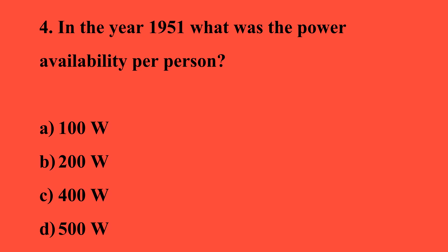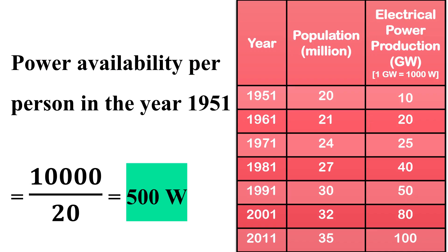The fourth question is: in the year 1951, what was the power availability per person? The options are A: 100 watts, B: 200 watts, C: 400 watts, and D: 500 watts. The power production is given in gigawatts. For 1951, the electrical power production is 10 gigawatts, which is 10,000 watts. Dividing 10,000 watts by the population in 1951, which is 20 million, we get 10,000 divided by 20 equals 500 watts. Therefore, the answer is option D, 500 watts.